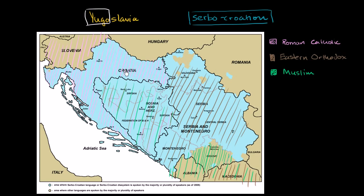Here is a religious breakdown of the former state of Yugoslavia. In pinkish color are the areas that are predominantly Roman Catholic — Slovenia and Croatia are primarily Roman Catholic. Serbia and Montenegro are primarily Eastern Orthodox. Kosovo has a strong Muslim majority, and before its breakup, Kosovo was kind of part of Serbia and Montenegro despite having this very different religious makeup.